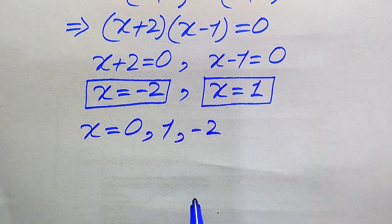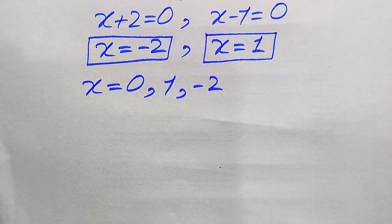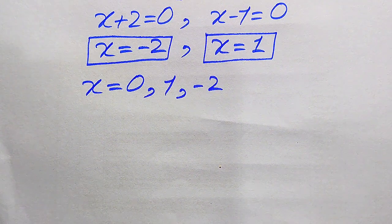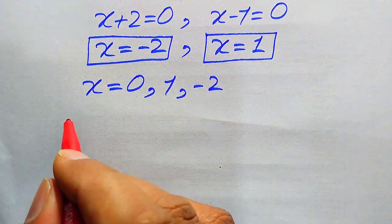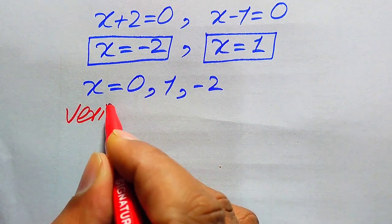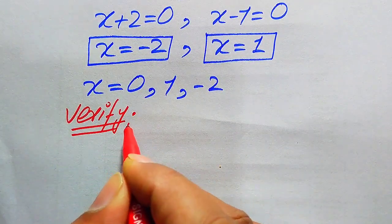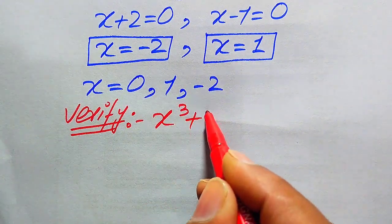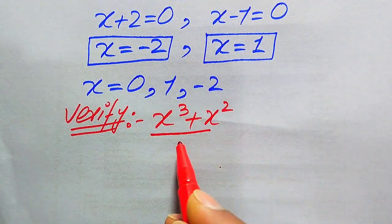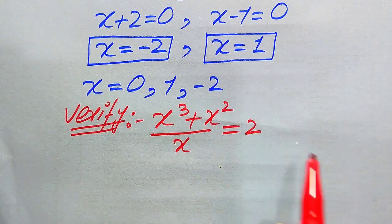Now in the next step we need to verify which of the roots are solutions and which are extraneous roots. For verification we copy down the original equation: (x³ + x²) divided by x equals 2.